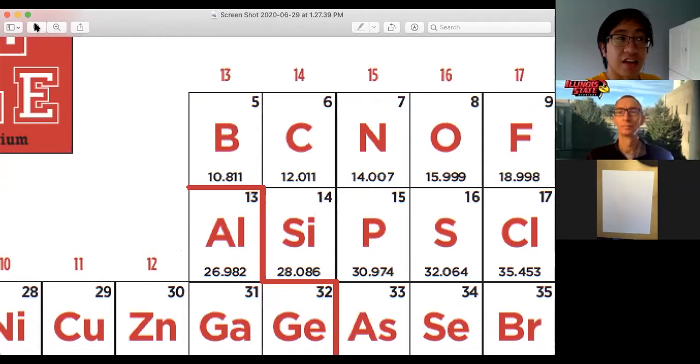But I think one thing that kind of confused me when I first started learning about this is why are there so many decimal places? Well, let me rephrase that actually. Why are these masses, why do they have decimal places at all in the first place? Why aren't they whole numbers? Yeah. Clean whole numbers. Yeah.